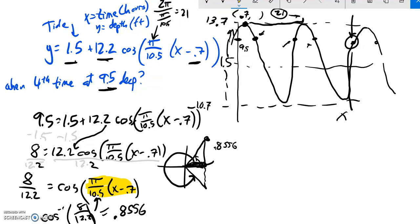Notice since this angle here is equal to that angle there, I should just be able to go a full rotation minus that. So 2 pi minus 0.8556. And I'm going to do that on my calculator. That looks like about 5.428.